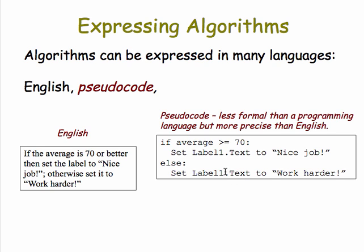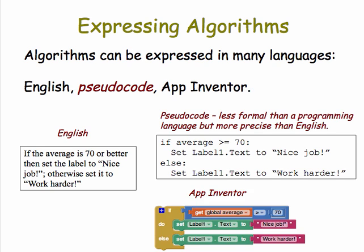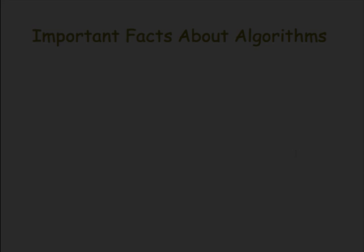And finally, you can express the algorithm in a programming language, in a high-level programming language, or a low-level programming language. In this case, we are expressing it in App Inventor, but we could do Python or Fortran or Java or machine language.